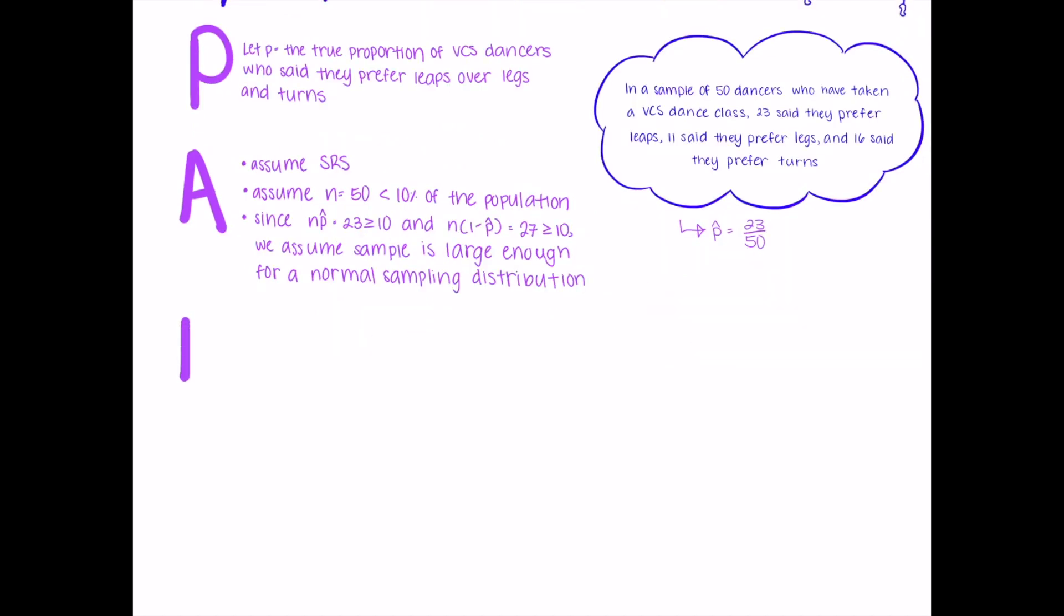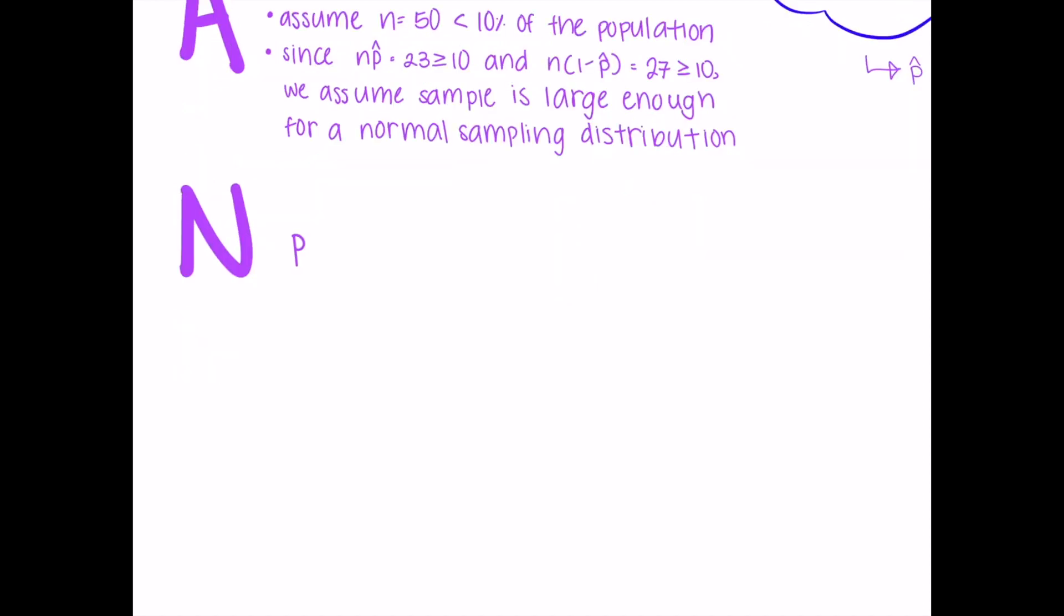N stands for name or formula. In this case, we use the formula P hat plus or minus Z crit times the square root of P hat times 1 minus P hat over n.